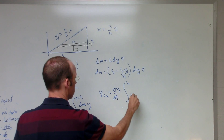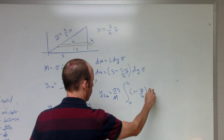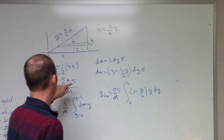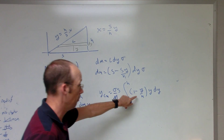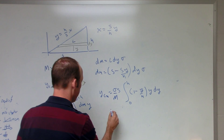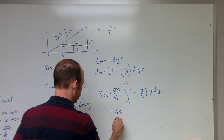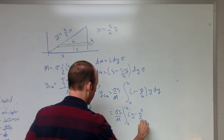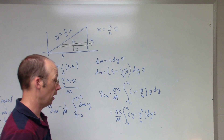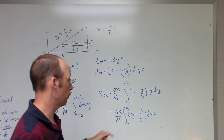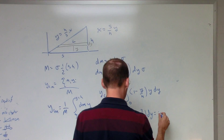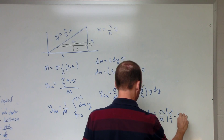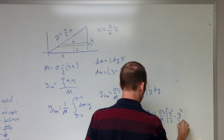That integrand is (1 − y/h) × y, which is the mass element times the y coordinate. Multiplying out gives σs/m times the integral from 0 to h of (y − y²/h) dy. Integrating: the integral of y is y²/2, and the integral of y²/h is y³/(3h). So I get σs/m times [y²/2 − y³/(3h)] evaluated from 0 to h.